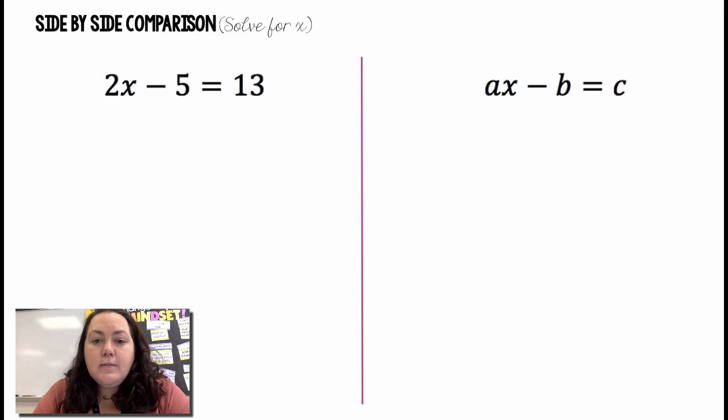Okay, so the 2x minus 5 equals 13. So most of you guys know that the first thing we would do is add 5 to both sides. That's going to cancel. I'm going to get 2x equals 18.